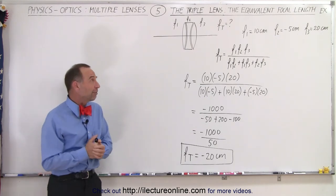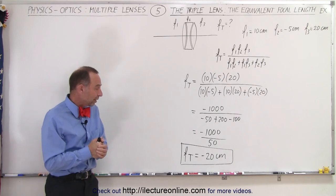So anyway, that's how we find the equivalent focal length of a triple lens system.